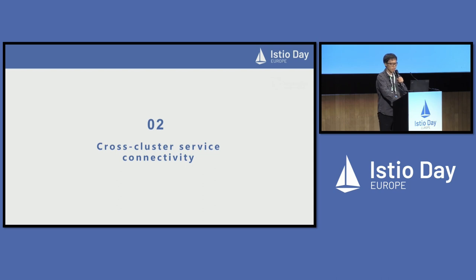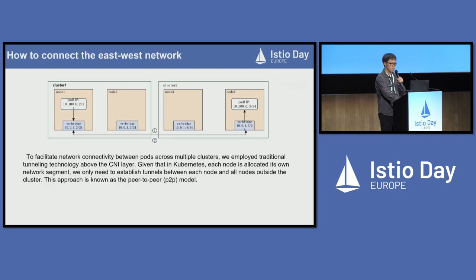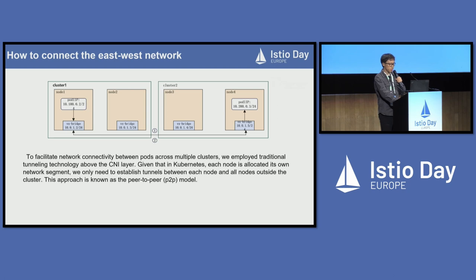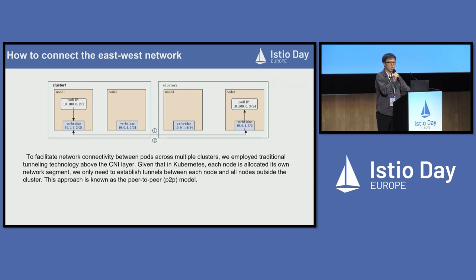Next, let's talk about how to establish connectivity between container networks across multiple clusters. To facilitate network connectivity between pods across multiple clusters, we employ traditional tunneling technology above the CNI layer. Given that in Kubernetes each node is allocated its own network segment, we only need to establish tunnels between each node and all nodes outside of the cluster. This approach is feasible in scenarios where there is network interconnectivity between nodes across multiple clusters, and is known as the peer-to-peer model.